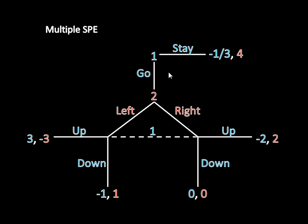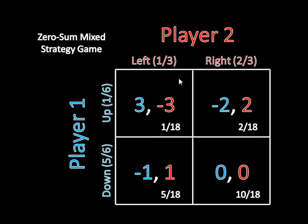In order to figure out whether Player 1 should go here, we need to figure out his expected utility for going. We know what Player 2 is going to do — she'll mix — and we know Player 1 will mix between up and down. But we need to measure the quality of this outcome for Player 1 to compare it to what he earns by staying. We need to calculate the expected payoff given the mixed strategy Nash equilibrium. The up-left outcome occurs with probability 1/6 × 1/3 = 1/18; down-left with 5/6 × 1/3 = 5/18; up-right with 1/6 × 2/3 = 2/18; and down-right with 5/6 × 2/3 = 10/18.